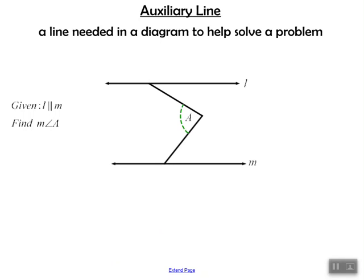But the problem is, in the diagram we're given, we have two parallel lines with two transversals, and none of those theorems or postulates can apply when we have two transversals. So what we're going to do is add in a third line at the intersection of the two transversals. Then it splits the problem into two parallel lines with one transversal, and then another two parallel lines with another transversal — and now we can apply the postulate and theorems we've discussed.